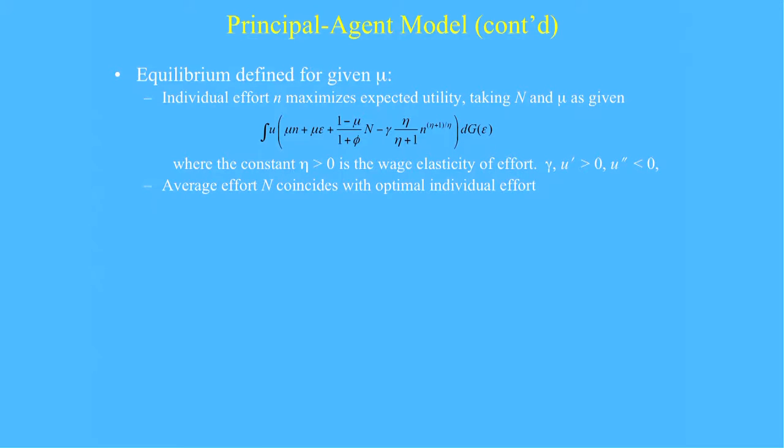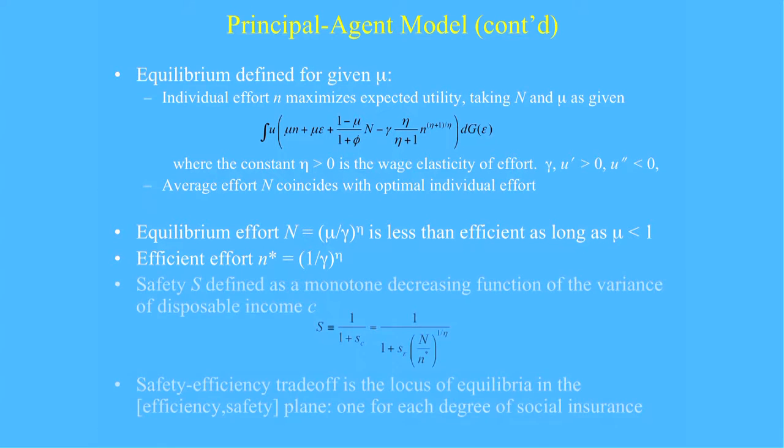The effort's got to be optimal to the individuals and there's an aggregate consistency condition that the average equals the individual's choices. I use a different functional form than Holmstrom and Milgram so I get a nice easy solution for the equilibrium effort. It just depends on this utility parameter gamma and on the degree of social insurance. The more you keep for yourself, the more you work. To the degree that there's any social insurance, the effort is less than efficient. Eta is a utility parameter, the wage elasticity of effort supply.